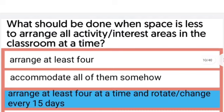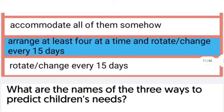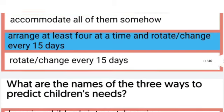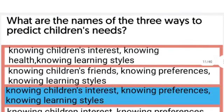What should be done when space is less to arrange all activity interest areas in the classroom at a time? The right answer is arrange at least four at a time and rotate or change every 15 days. The next one: What are the names of the three ways to predict children's needs?